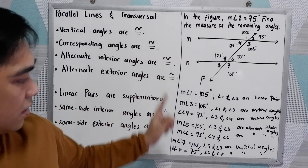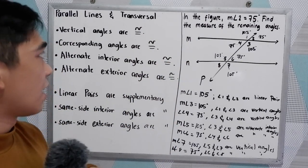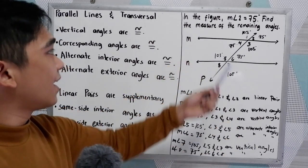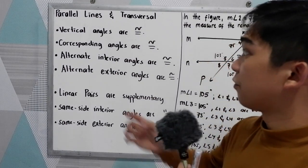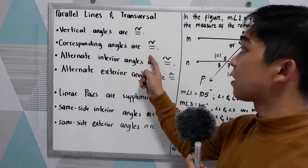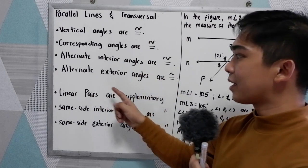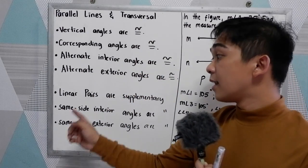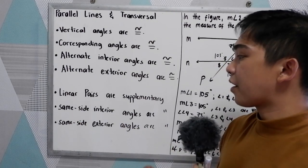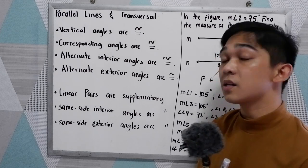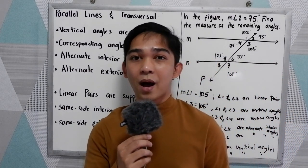We're done finding the remaining measures of the angles in a parallel line cut by a transversal. To recap: vertical angles are congruent, corresponding angles are congruent, alternate interior angles are congruent, alternate exterior angles are congruent, linear pairs are supplementary, same side interior angles are supplementary, and same side exterior angles are supplementary. Thank you for watching, Senor Pablo TV.